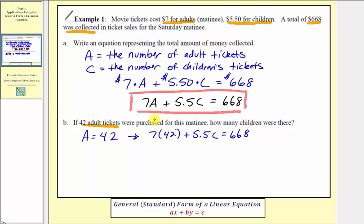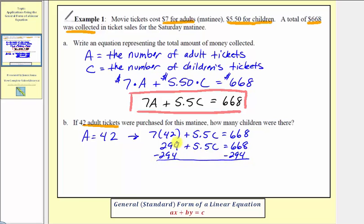Seven times 42 is equal to 294. So now we have 294 plus five point five C equals six hundred sixty-eight. We have a basic two-step equation, so for the next step we isolate the C term by subtracting 294 on both sides. Simplifying, we have five point five C equals six hundred sixty-eight minus 294, which equals 374. And now we divide both sides by five point five. Simplifying, we have C equals three hundred seventy-four divided by five point five, which equals sixty-eight.